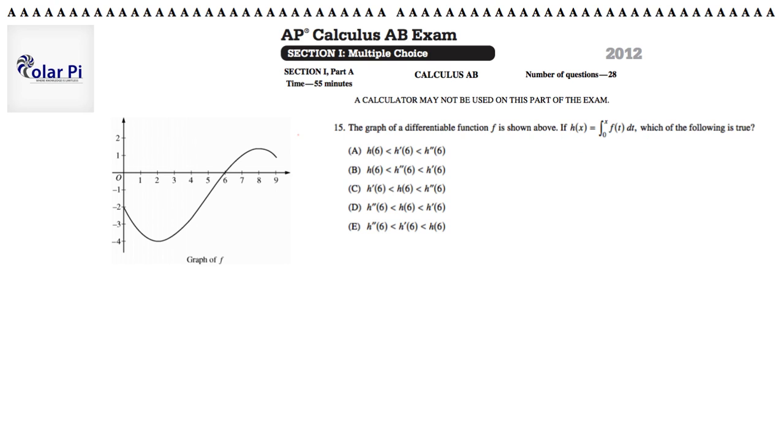And then it says, if h of x is equal to this guy, which is the integral from 0 to x of f of t dt, then which of the following is true? So if you quickly look at all the answer choices, they're all comparing the values of h to the value of h prime to the value of h double prime, all at 6. So then, this is not so bad, right?